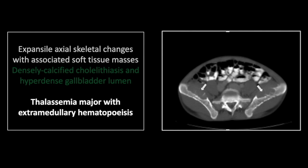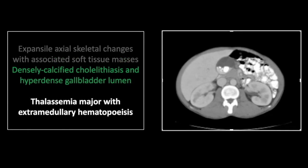Note the spacing of the trabeculi throughout the iliac bones. In the right upper quadrant, there are classic bilirubin gallstones, varied in size, densely calcified, and associated with layering milk of calcium within the gallbladder.